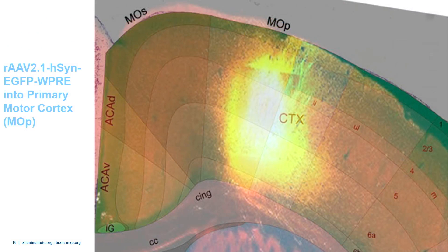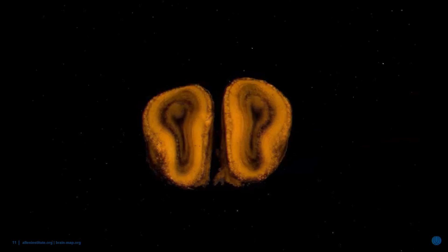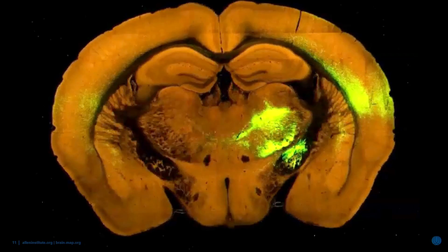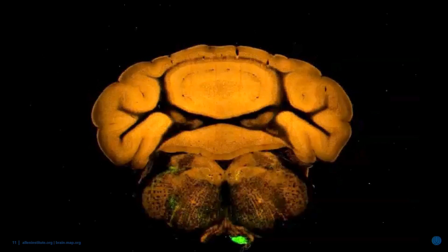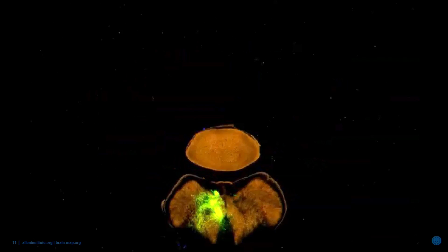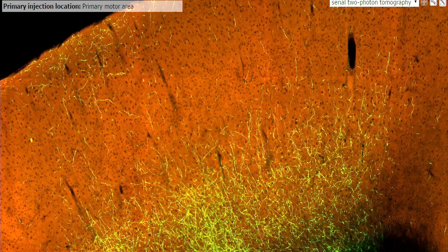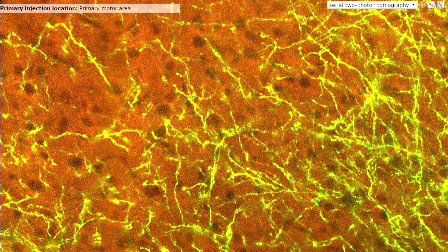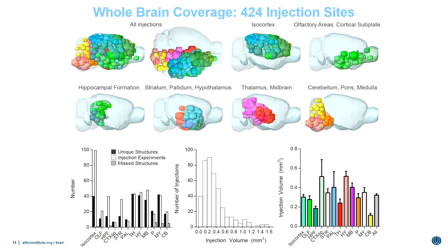All image series go through our informatics data processing pipeline, which includes pre-processing steps and — most importantly — detection of the fluorescent signal as well as alignment and registration of these image series into our Allen 3D reference space, the mouse common coordinate framework. All data can then be pushed up onto the web. Here's one example: an injection into a wild-type animal in the primary motor cortex, shown as a fly-through of 140 coronal sections with fluorescence tracked throughout the entire brain at high resolution.